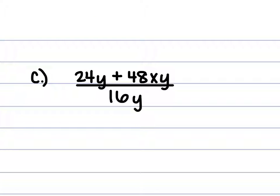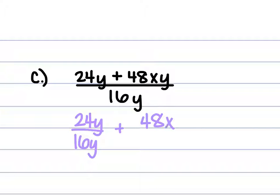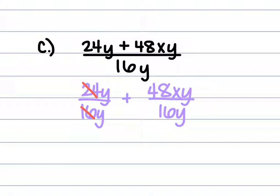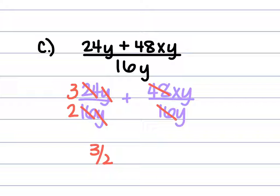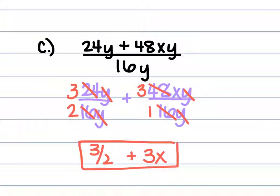For c, we have 24y plus 48xy, all over 16y. We split this up as 24y over 16y plus 48xy over 16y. The 16 and 24 are both divisible by 8: 8 goes into 16 twice and into 24 three times, and the y's cancel, giving 3 over 2. For the second term, 16 goes into 48 three times, the y's cancel, and x is left over, giving 3x. So the answer is 3 over 2 plus 3x.